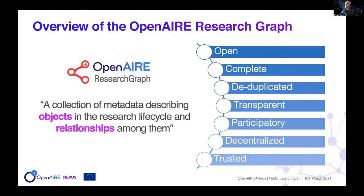The graph must be transparent, including provenance information for the different bits of information it includes. It must support a participatory approach — it should not be the result of a closed network of contributions. It must be decentralized in the sense that the ownership of contents stays where the material is deposited, so in repositories. And it must of course be trusted — an important goal is the control of metadata record quality.